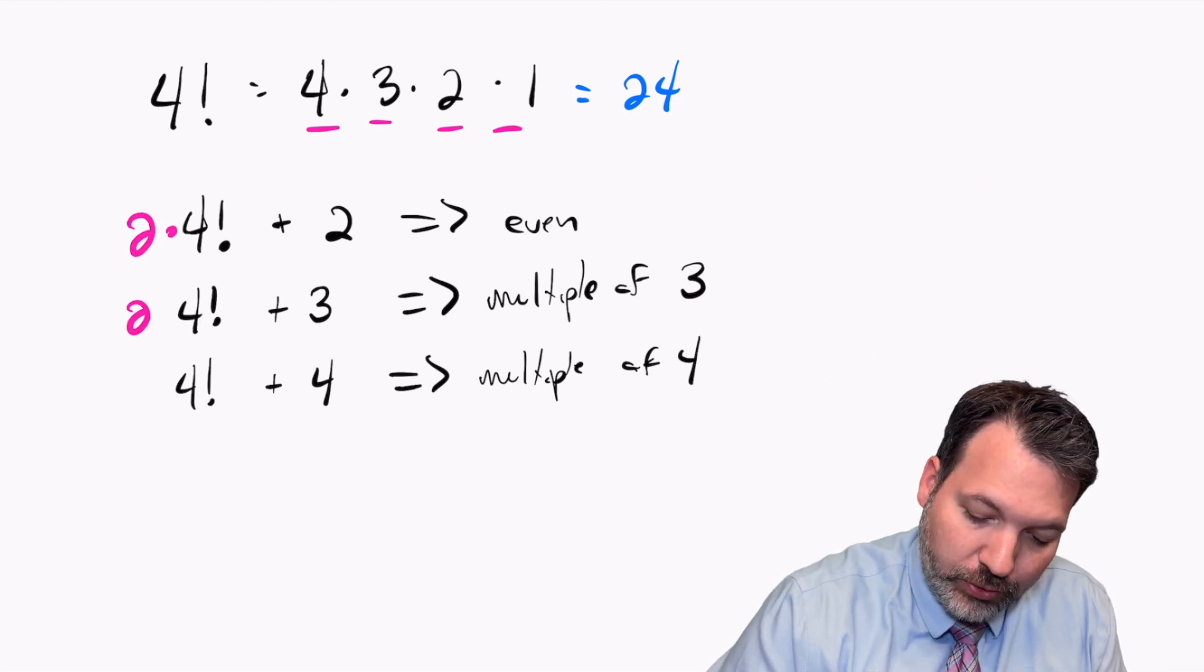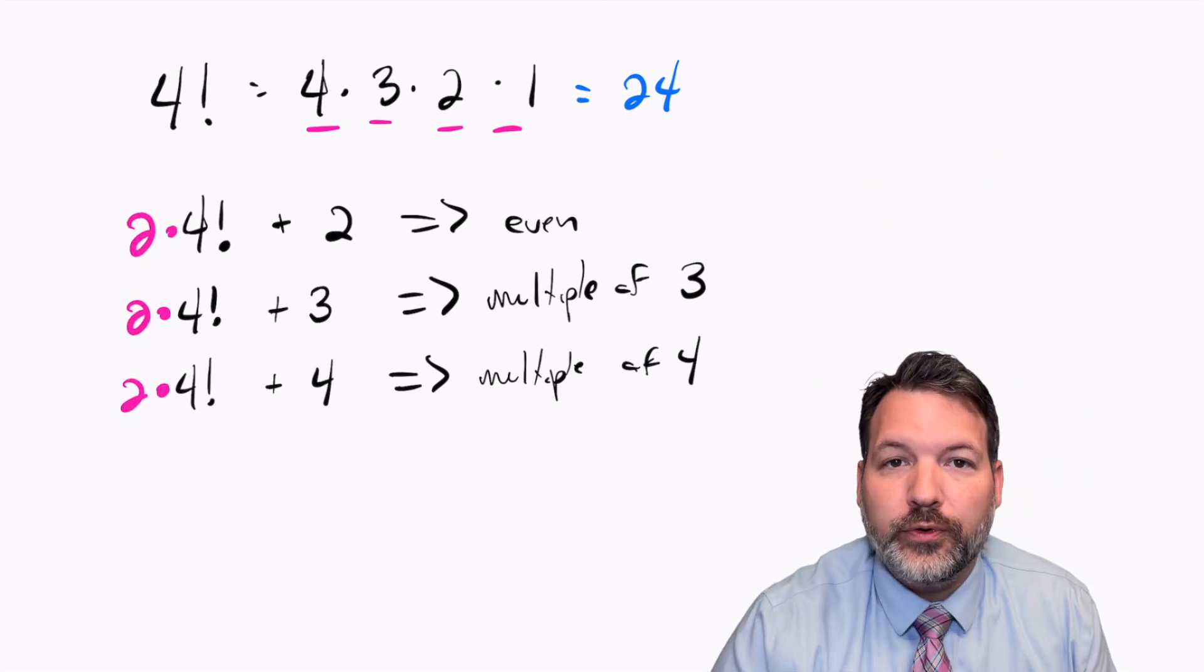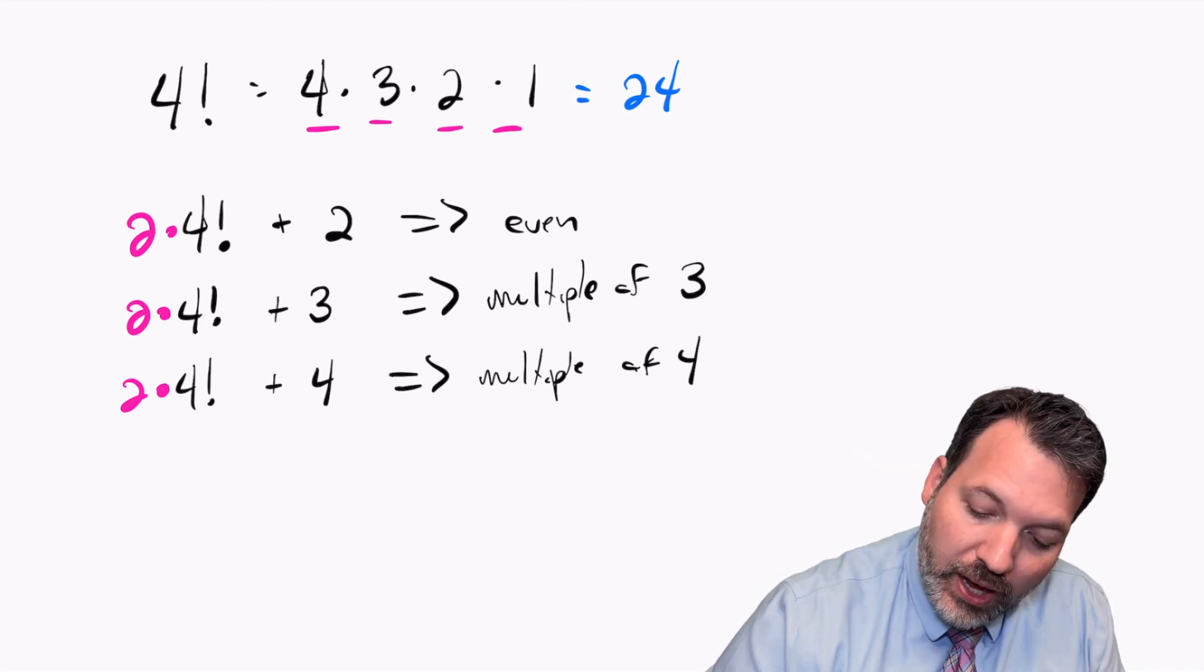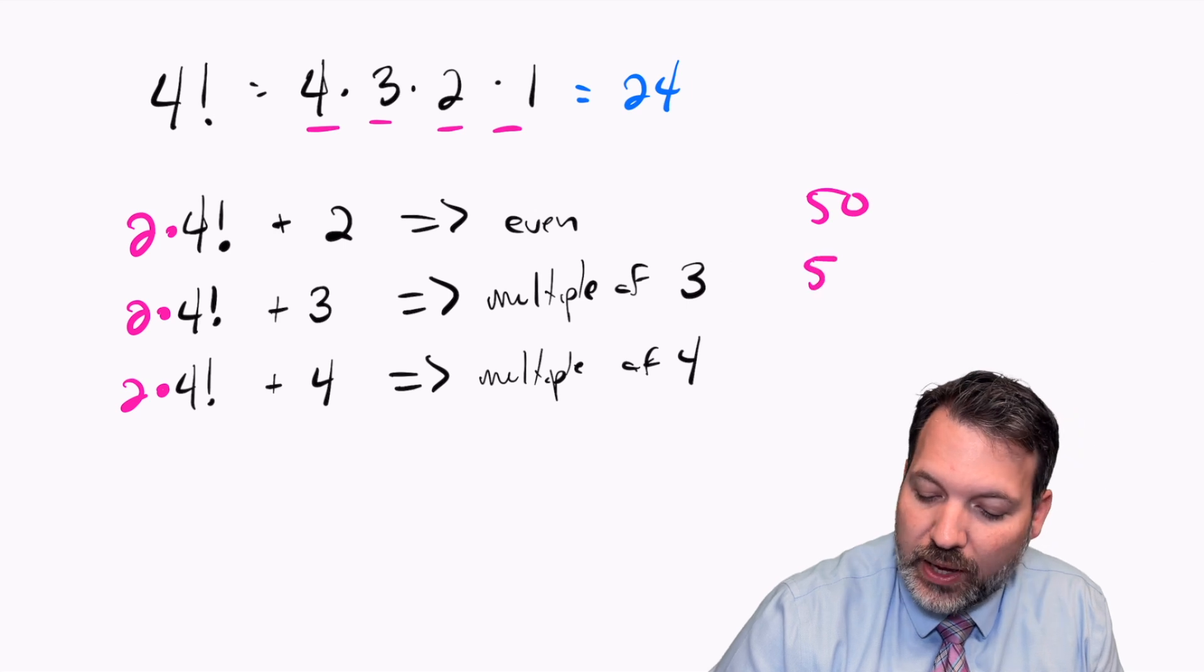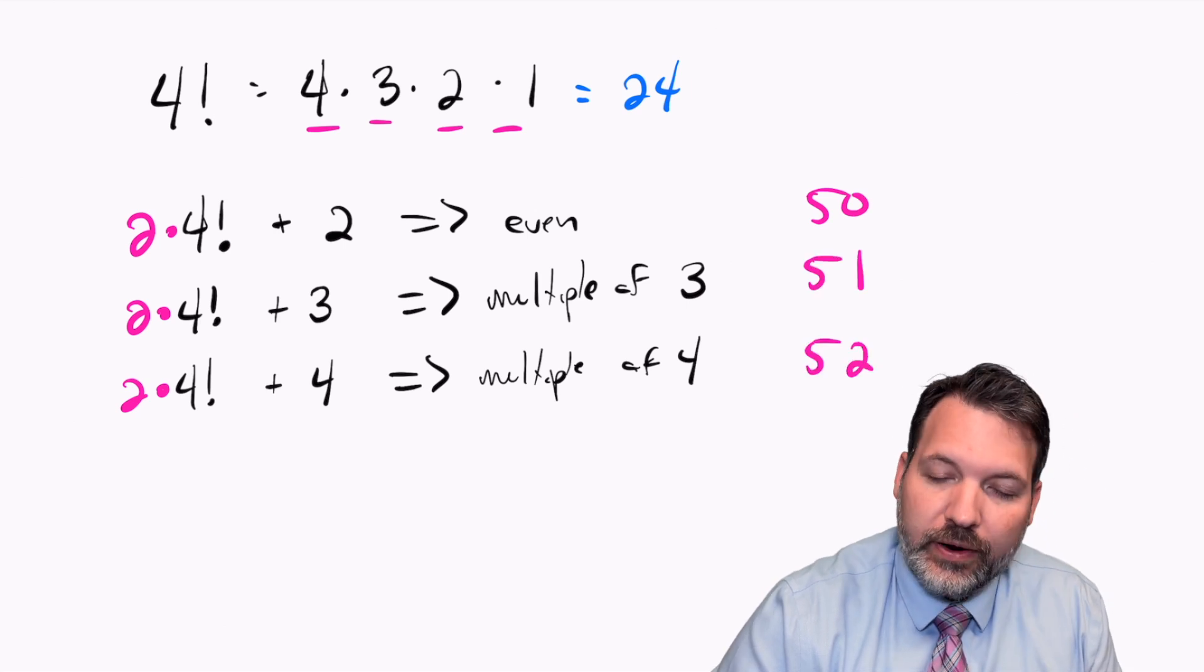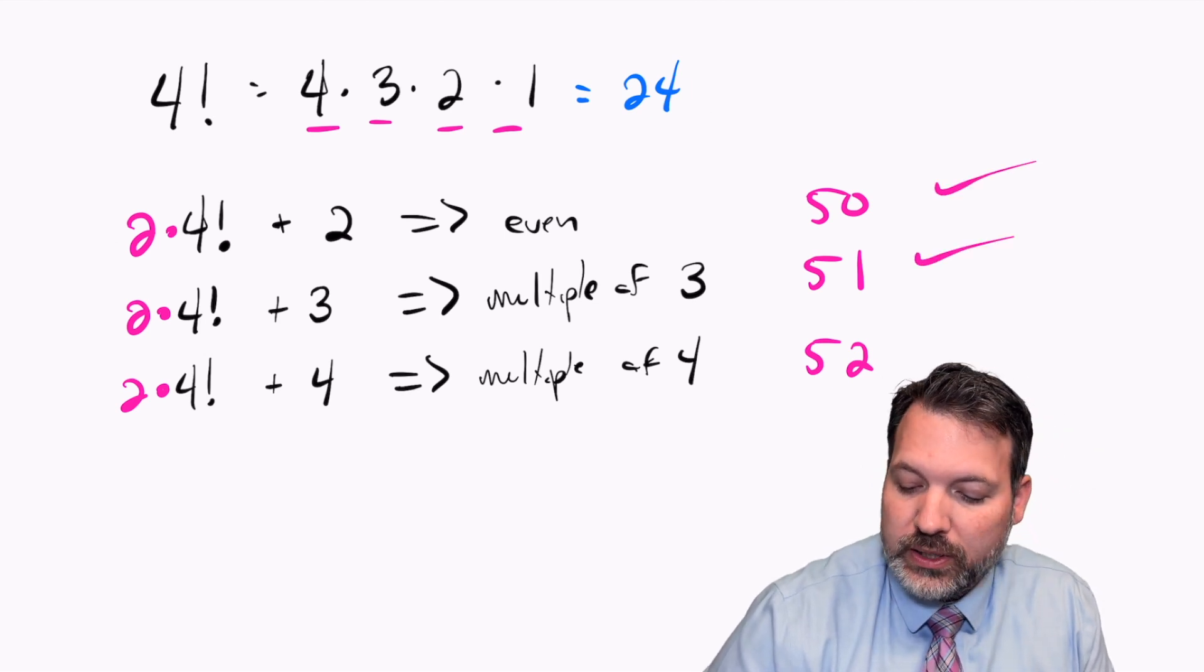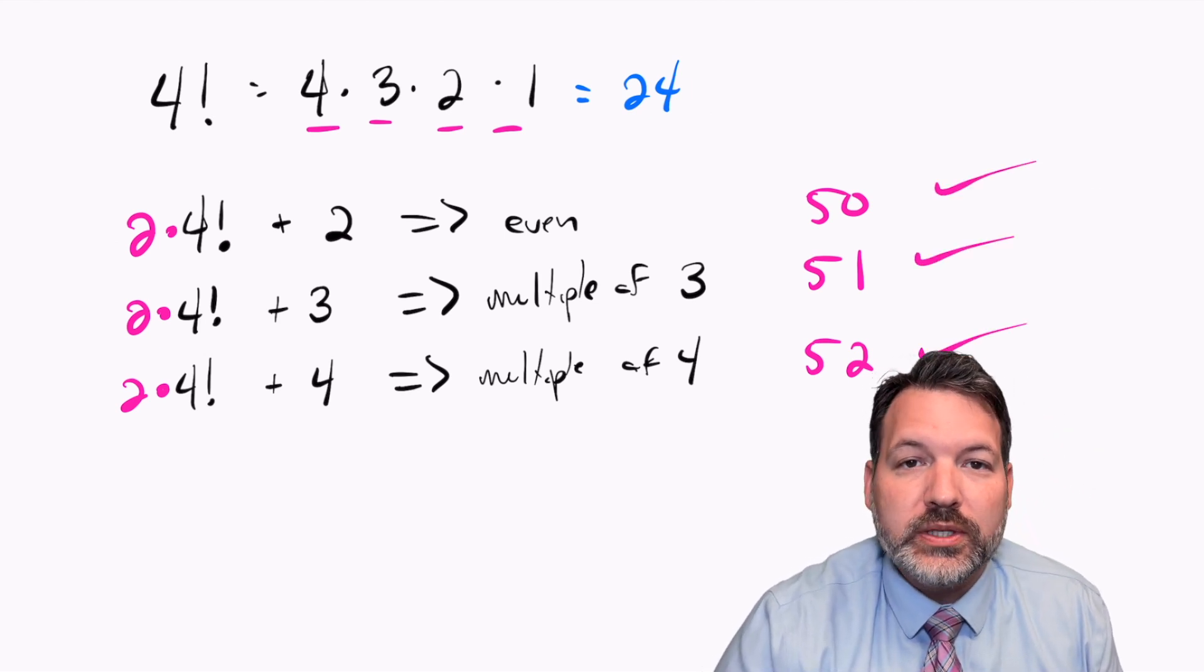So 2 times 4 factorial, for example, 2 times 24 is 48, lets us construct a new set of at least three composite numbers in a row. 48 plus 2 makes 50, 48 plus 3 makes 51, and 48 plus 4 makes 52. 50 is even, 51 is a multiple of 3, and 52 is a multiple of 4.